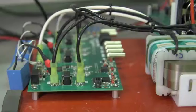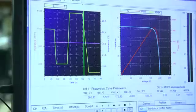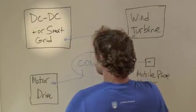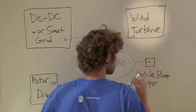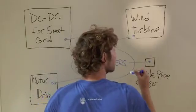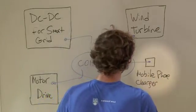What we do with the power converter is we program it with an algorithm that is adaptive so it can take the maximum possible energy from both wind and solar. From DC-DC converters for smart grid applications to motor drives to wind turbines generating 100,000 watts or mobile phone chargers consuming just a couple of watts.